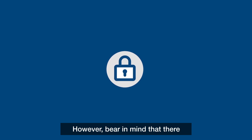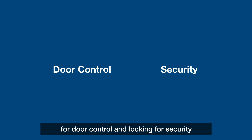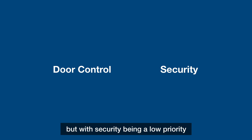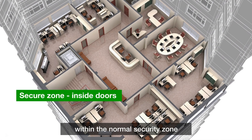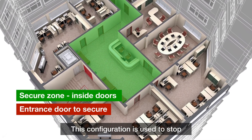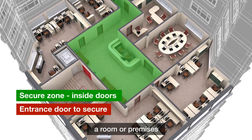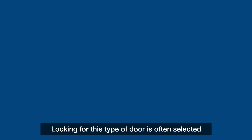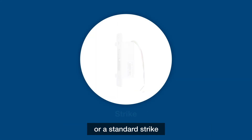Access control also covers locking. However, bear in mind that there is a difference between locking for door control and locking for security. The term door control refers to keeping doors shut and locked, but with security being a low priority. These would normally be doors on the inside of a building within the normal security zone. This configuration is used to stop unauthorised people from entering a room or premises.